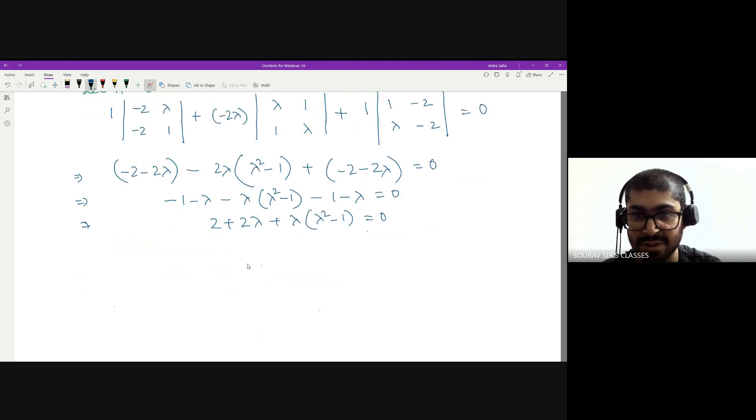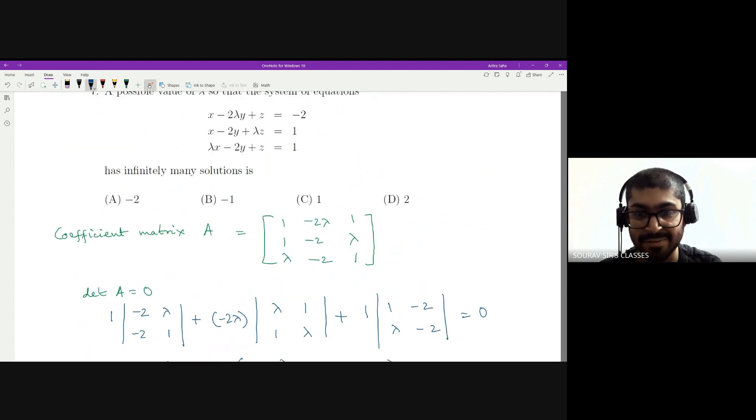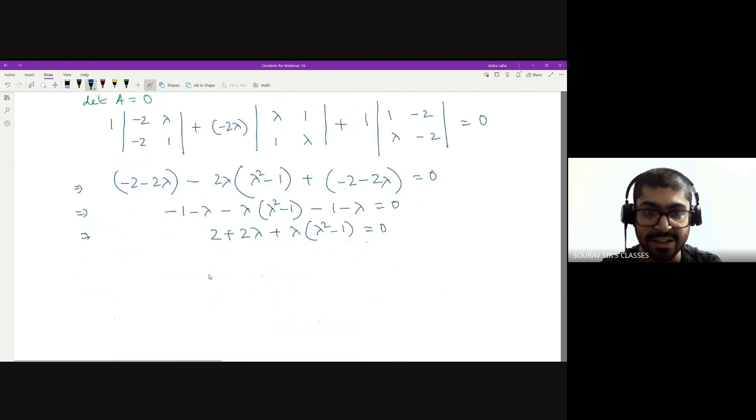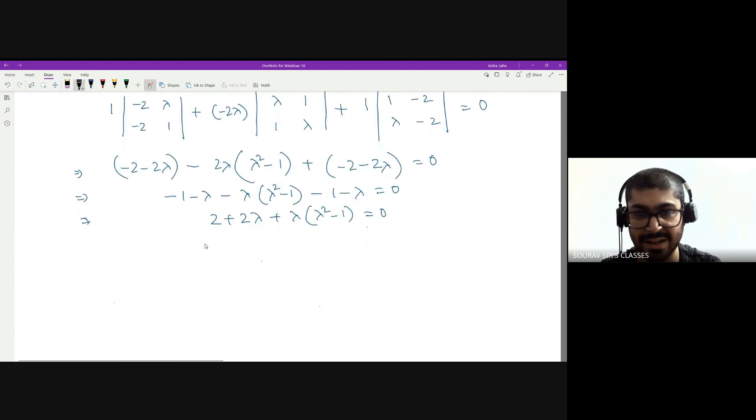Now you just got to check for which value of lambda will this equation be satisfied. This is a competitive exam. You don't need to solve this cubic equation. You can, but you may not. Just check the values. I have -2, -1, 1, and 2. So all the values from -2 to 2, excluding zero. These are the values that I have with me.